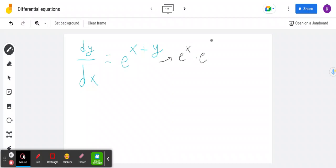And since we're going to have one side to be in terms of x and one side to be in terms of y, I'm going to divide both sides by e to the y and multiply both sides by dx.